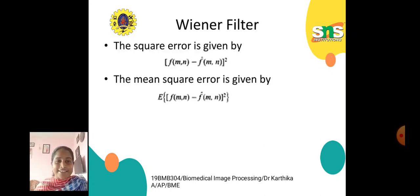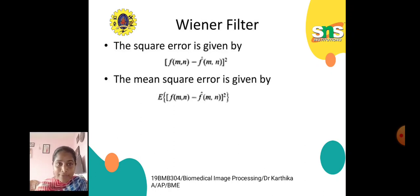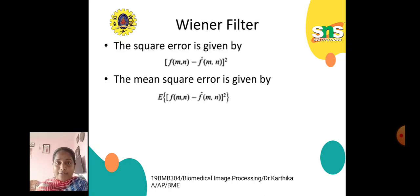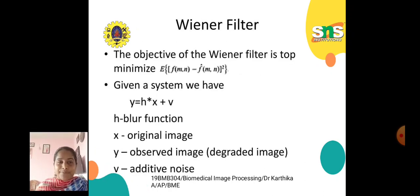In Wiener filtering, the square error is given by f(MN) minus f-cap(MN), whole squared. The mean square error is given by E of [f(M,N) minus f-cap(MN)] squared. The difference: for square error we have f(MN) minus f-cap(MN) squared, and for mean square error we have E of [f(M,N) minus f-cap(MN)] squared. The objective of the Wiener filter is to minimize E of [f(MN) minus f-cap(MN)] squared.